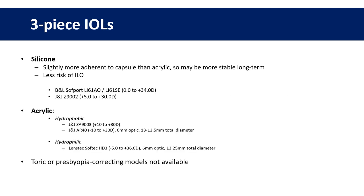Looking more closely at three-piece lenses: if you have a choice, a silicone lens is a good option. They're slightly more adherent to the capsule than acrylic, so they may be more stable. There's also less risk of ILO when the piggyback material is different to the in-the-bag material. That said, acrylic lenses are still fine to use and the risk of ILO is very low unless both lenses are in the bag, which is very unusual nowadays.